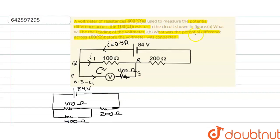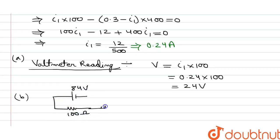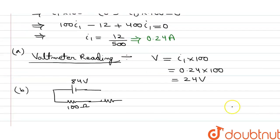For Part B, we need the potential difference across 100 ohm before the voltmeter was connected. Before the voltmeter was connected, the circuit had only two resistors: 100 ohm and 200 ohm, with the 84 volt cell. There was no voltmeter attached to the 100 ohm.